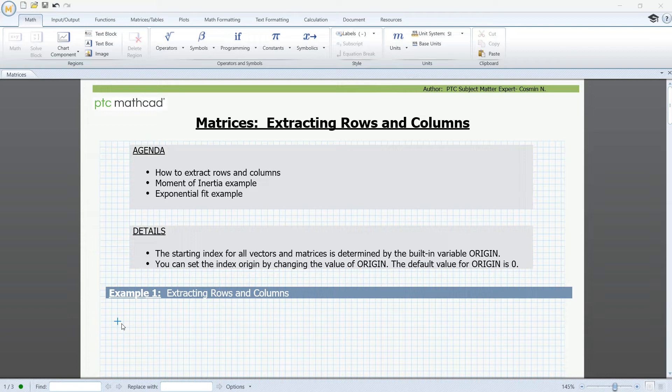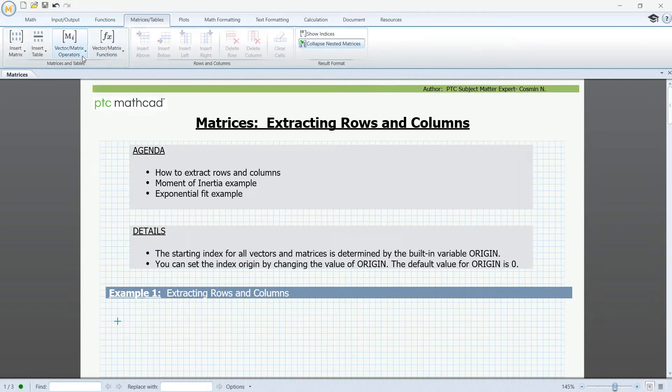First, let me show you where you can find them on the ribbon and how to insert them in your worksheet. If we go to the matrices and tables tab, under vector and matrix operators, we will see here the matrix column operator and the matrix row operator.